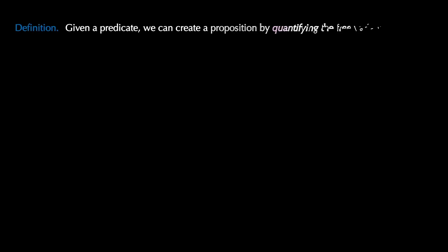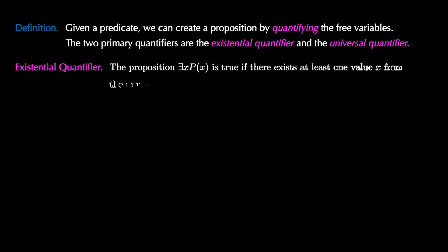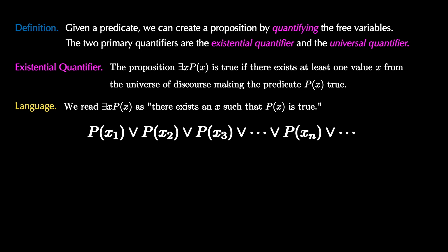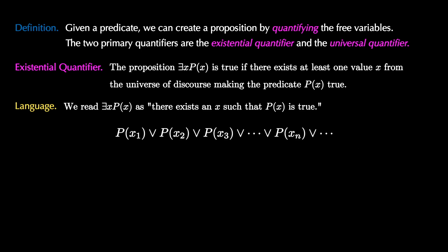An alternate way to get propositions from predicates is to add quantifiers. Let's investigate the existential and universal quantifiers. Given a predicate of the form P(x), we can create a proposition by quantifying the free variables — that is, by asking how many values make the predicate true. The existential quantifier is denoted by a backwards E, and the proposition 'there exists x, P(x)' is true if there exists at least one value from the universe making the predicate true. The existential quantifier can be thought of as an infinite 'or' over the universe, because we're just looking for one possible value that makes the predicate true.